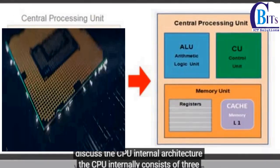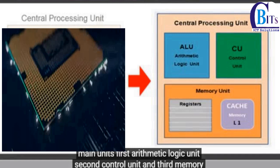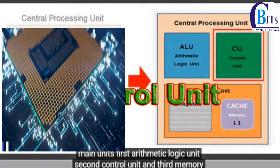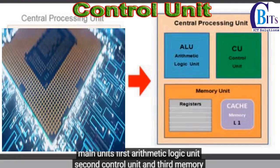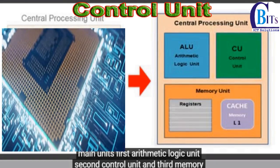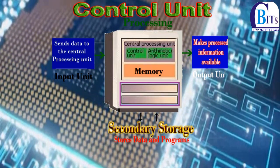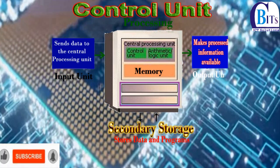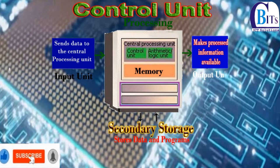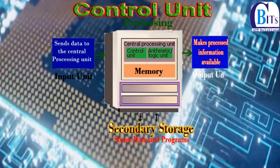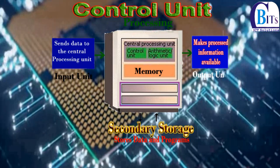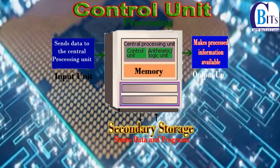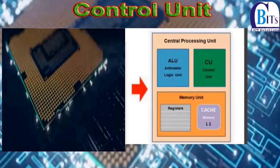Each part has a specific function. The Control Unit contains circuitry that uses electrical signals to direct the entire computer system to carry out or execute stored program instructions. Like a team leader, the Control Unit doesn't execute program instructions itself; rather, it directs other parts of the system to do so. The Control Unit must communicate with both the Arithmetic Logic Unit and memory.